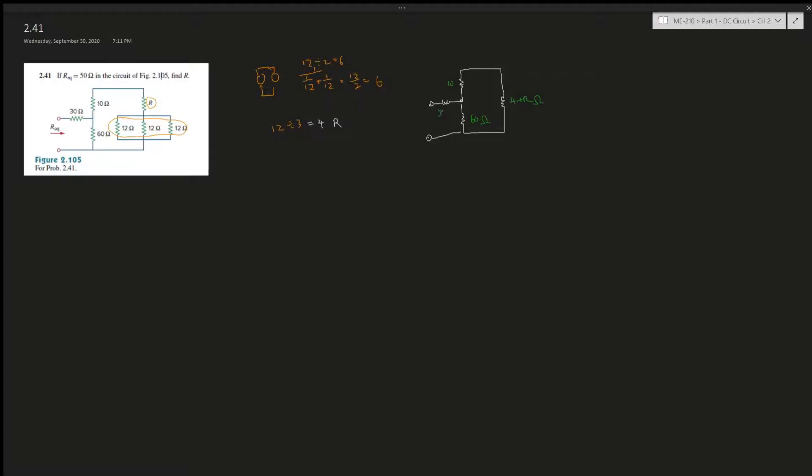And then this is 60 ohms, and this is 30 ohms. Okay, and as we can tell, this and this are in series because we can simplify this to what we usually look at. The 60 is over here, the 4 plus R is over here, and the 10 is over here, and this is 30.